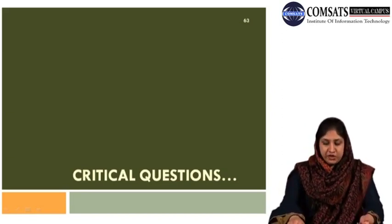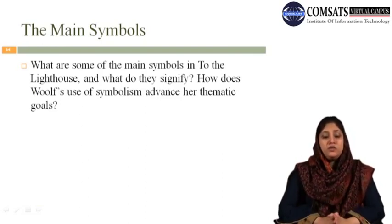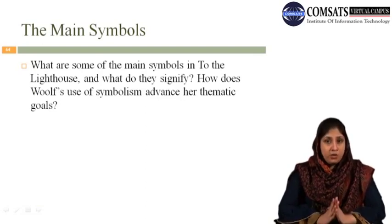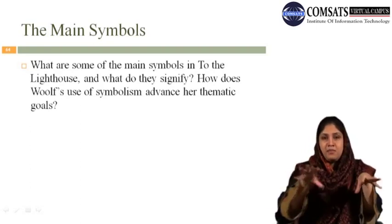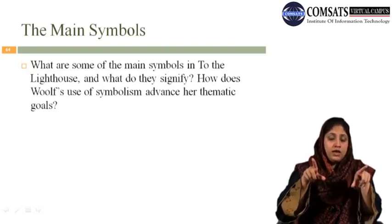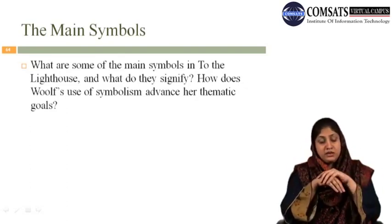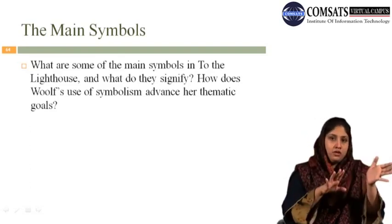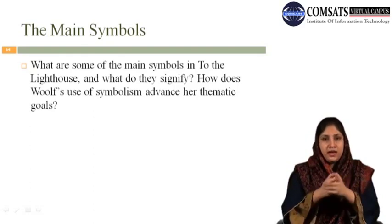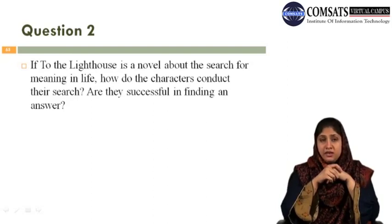Now let's look at some important critical questions for the examination. The first: What are some of the main symbols in To the Lighthouse and what do they signify? How does Woolf's use of symbolism advance her thematic goals? This has been discussed in detail by touching upon all the important symbols, though there are many minor symbols in the story as well that were covered in the detailed lecture series. The second question: If To the Lighthouse is a novel about the search for meaning in life, how do the characters conduct their search and are they successful in finding an answer?